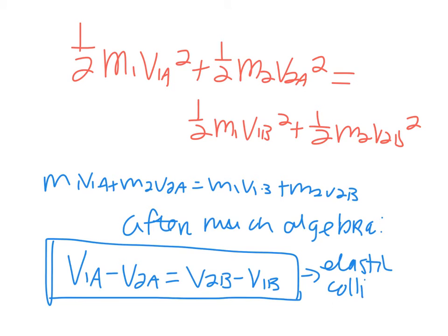We need that equation because we end up with two equations and two unknowns, and this is the second equation we'll use to solve. This equation will be given to you on the board for a test — it comes from combining conservation of kinetic energy and conservation of momentum through a lot of algebra.